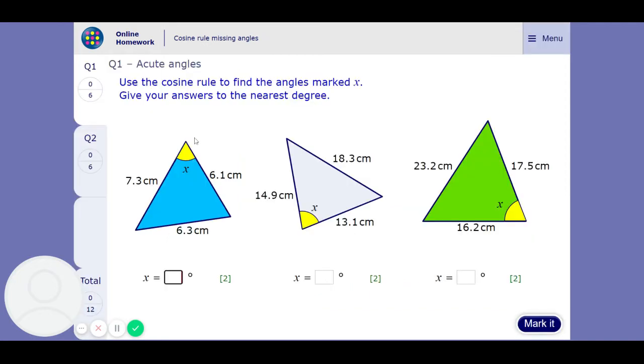So you know to use the cosine rule when you've got three sides, you're looking for an angle and it's not a right angle triangle. That's one of the two instances when you need to use the cosine rule.